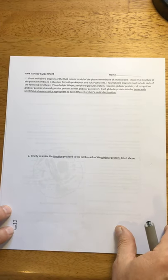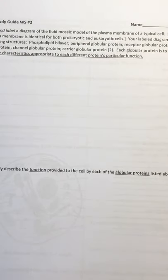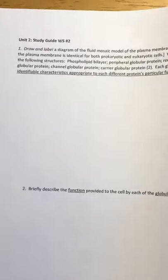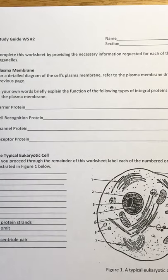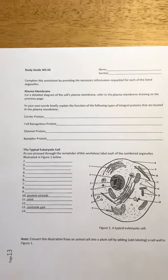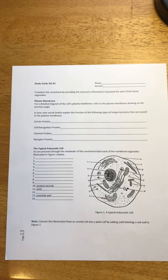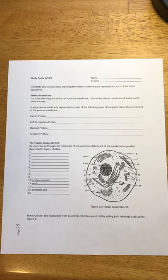If you locate this, it should be front and back. On the back side of this study guide worksheet number 2, you should have a graphic or a page that looks similar to this. Just a quick review of the globular proteins — the integral globular proteins associated with the plasma membrane.